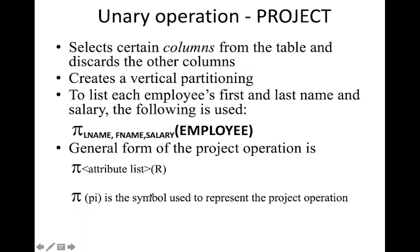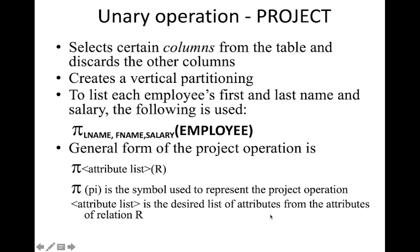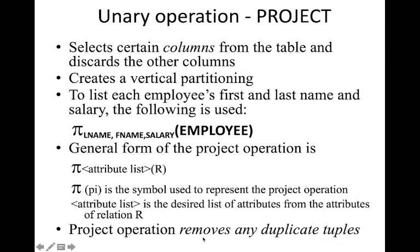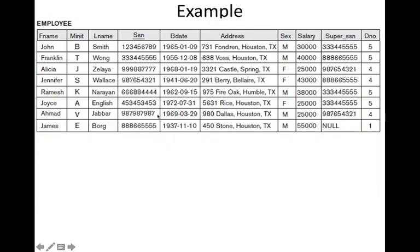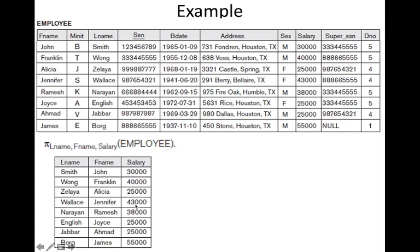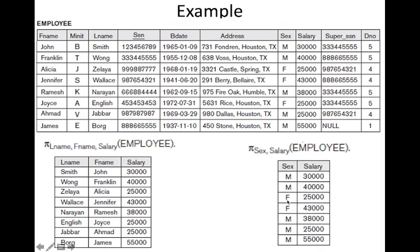The general format of project operation: specify PI, then the attribute list, and the table name. The attribute list contains the desired attributes to be shown. It will also remove any duplicate tuples — if you select only two or three columns there can be duplicate values, and those will be removed. For example, projecting only sex and salary: if F 25,000 appears twice, duplicate tuples will be eliminated and only one F 25,000 will be listed.